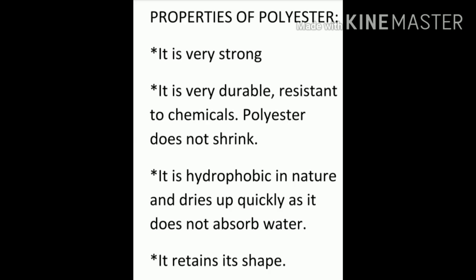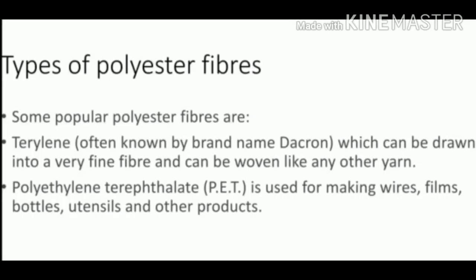We have different varieties of polyester fibers. Do you remember what are the types of polyester fibers? Some popular polyester fibers are terylene and also PET. The brand name of terylene is Dacron. Terylene can be drawn into a very fine fiber and also woven like any other yarn. That's why terylene is mostly used in the form of Dacron.